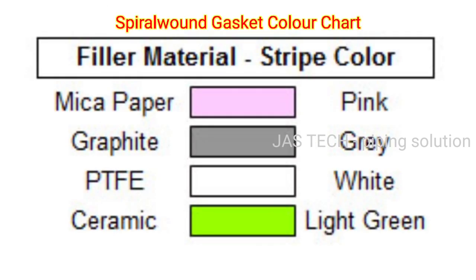Spiral wound gasket color chart - filler material strip color: Mica pepper - pink color. Graphite - gray color. PTFE (Teflon) - white color. Ceramic - light green color.